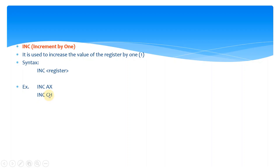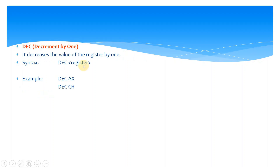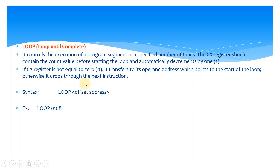For example, if the value of CH is five, then INC CH gives six. That is the INC instruction. The opposite is DEC, or decrement by one. The syntax is DEC followed by a register, such as DEC AX or DEC CH.